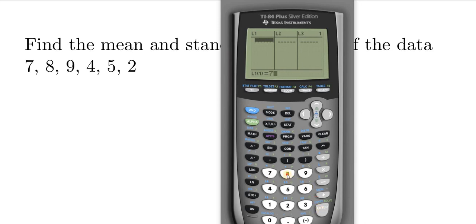So 7, 8, 9, 4, 5, 2. Then you hit stat. You hit the right arrow key to go over to calc. Hit enter, enter, enter, enter.